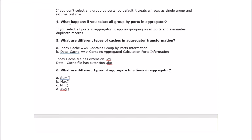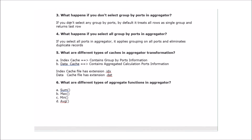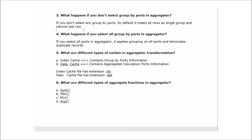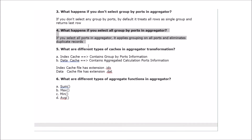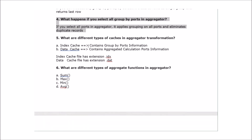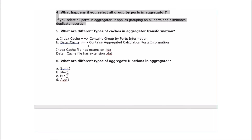The next question: what happens if you select all ports in group by in aggregator? If you select all ports in group by, then it eliminates duplicate records and returns only the distinct records.